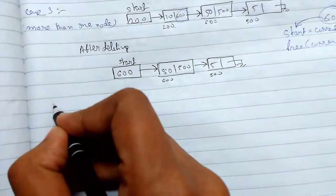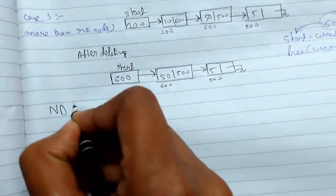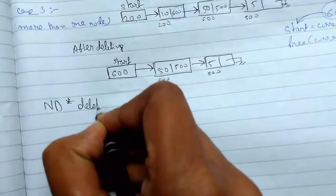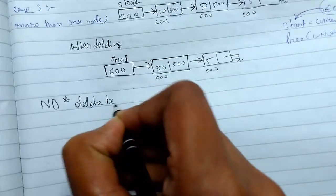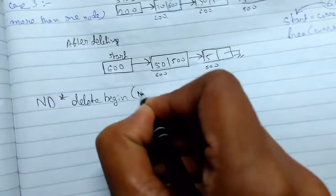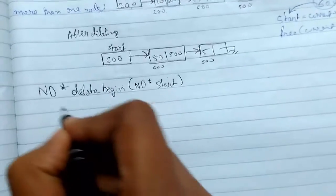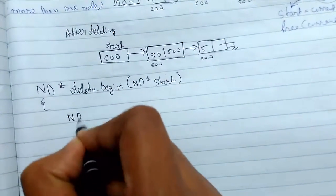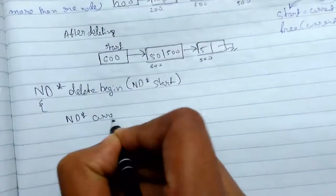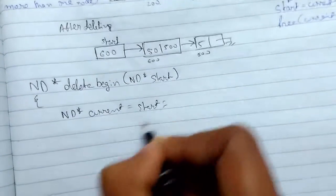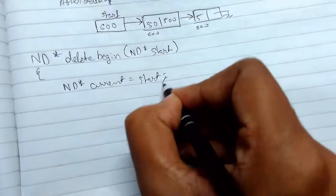So I hope you understood the explanation part. So let's write something like this, delete begin, so nd start and we will just take variable current and we will set it to start. We can do another line also but it doesn't matter at all.